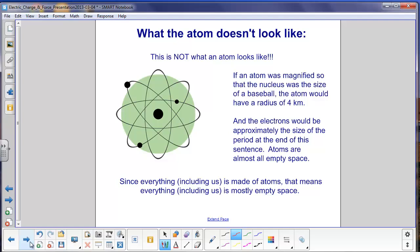The atom is mostly empty space. If the hydrogen atom could be magnified and viewed as the size of a baseball, its electron would be 4 kilometers or 2 and a half miles away and would be the size of a period at the end of a sentence in a physics book. So the atom, and by extension everything, including us, is mostly empty space.